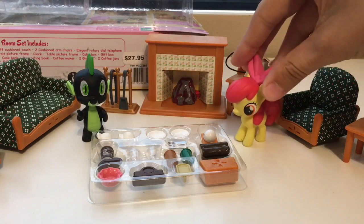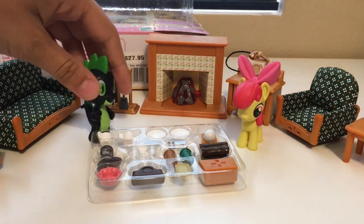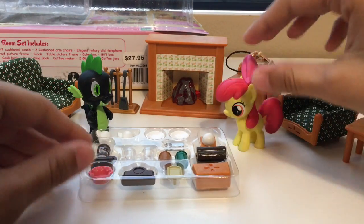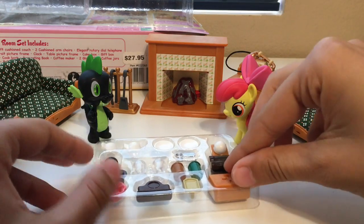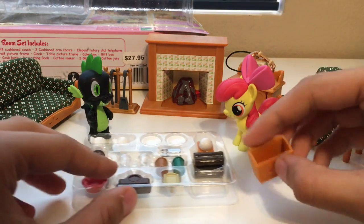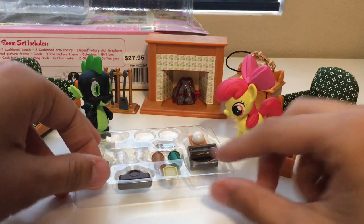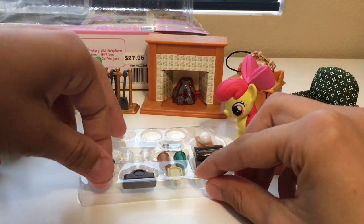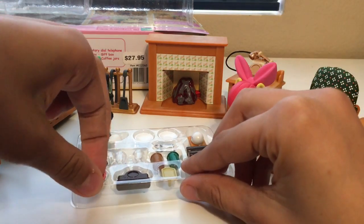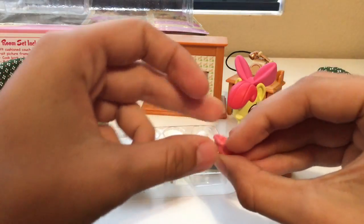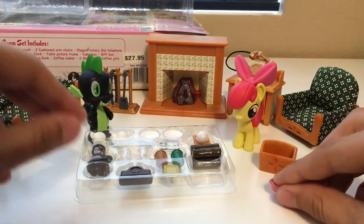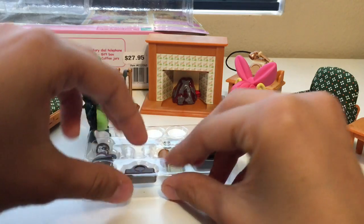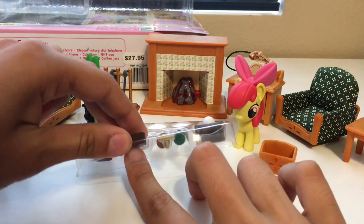Let's take a look at all the stuff that it came with. So it looks like there is a little basket thing. Why is it so hard to get all this stuff out? And another little cup type thing.